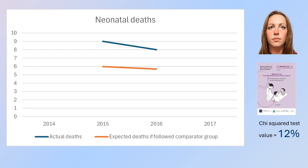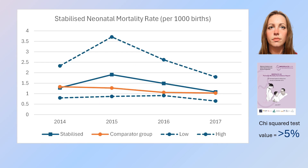There's one more way we can extract value from the MBRRACE study. The authors admit that calculating stabilised mortality rates is uncertain, and so they give a 95% confidence interval on the estimated stabilised mortality rates for each hospital. If we plot these low and high boundaries of the stabilised mortality rate, we can clearly see that the comparator group stabilised mortality rates are well within this alternative 95th confidence interval. So again, we cannot prove that the actual mortality rates are out of the normal range expected.